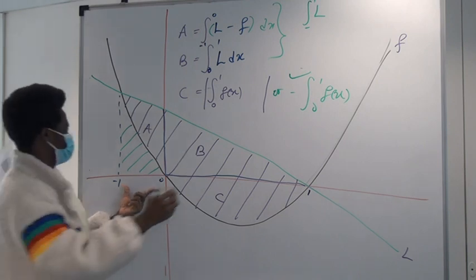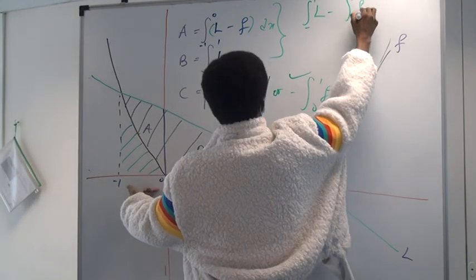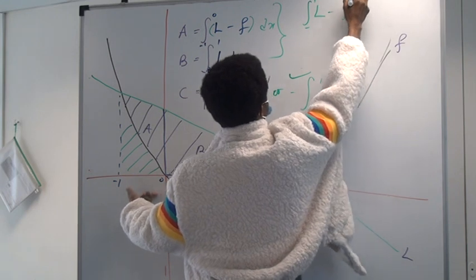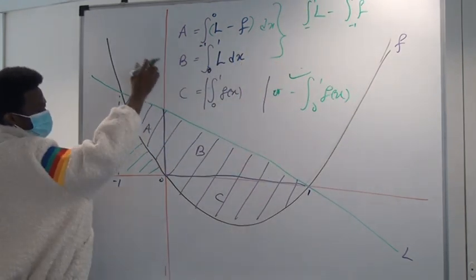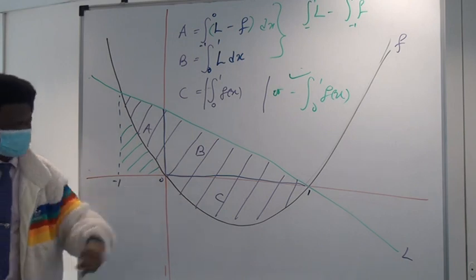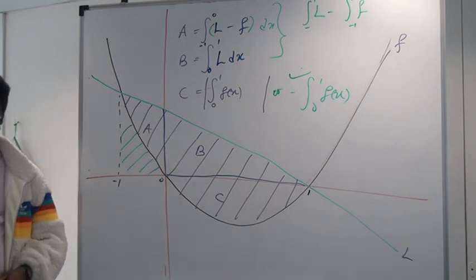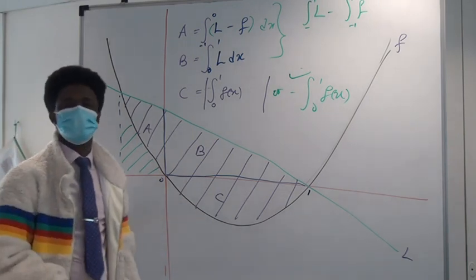The green part, which is the integral of f between minus one and zero, and that gives you this A and B combined again. But then you have to add it to C. Okay? Please try more questions on area from the first question. I'm going to add more.